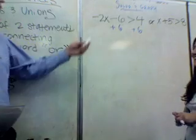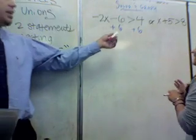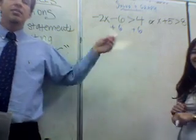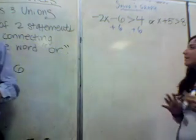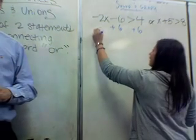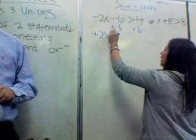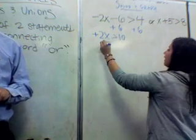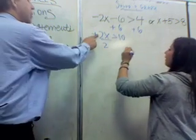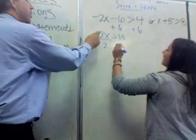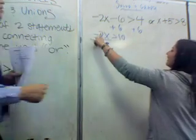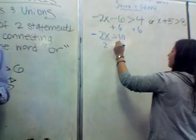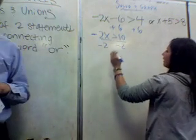We're going to go ahead with a disjunction. Eli is going to try it — she's already started. She adds 6 on both sides. She gets negative 2x is greater than 10. Good. That's a negative — this is not positive. That's negative 2. Now you divide by negative 2. She divides by negative 2.